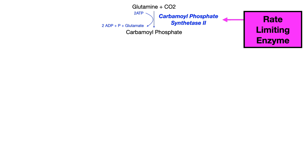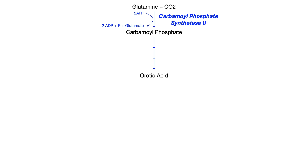Carbamoyl phosphate will then undergo a series of approximately three steps in which it's ultimately converted to orotic acid. The three steps shown are not necessarily important for you to know for exams, but you do need to know what pieces go in or come out. In the first step you need to use aspartate, in the second step water is a byproduct, and in the third step you need to put in NAD+.